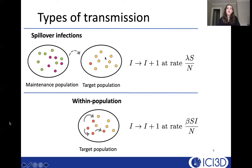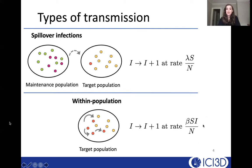Notice that the spillover rate doesn't depend on there being any infectious individuals in the target population. This is separate from the transmission events we've seen more often in this workshop — transmission within the population — where an infectious individual infects others and that rate does depend on there being infectious individuals. That rate is beta SI over N, which we've seen a lot in this course. This is an additional type of transmission we'll be considering in this tutorial.